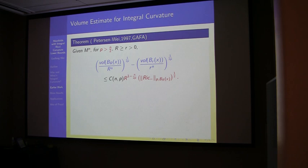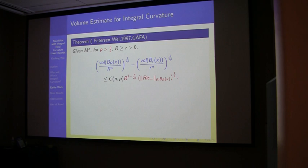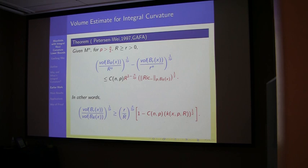For h equal to zero: the volume of a ball compared to a bigger ball — the usual volume comparison says this ratio is monotone decreasing. Instead of being less than or equal to zero, we have it less than this amount of Ricci curvature which fails to be non-negative. Again, there is no assumption about curvature at all — this is completely general and always true. If this integral term equals zero, it recovers the usual volume comparison.